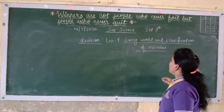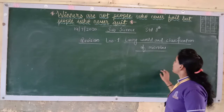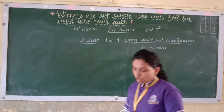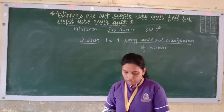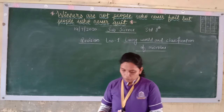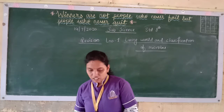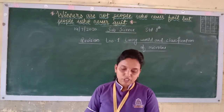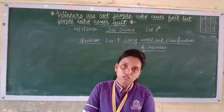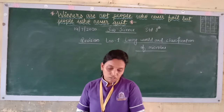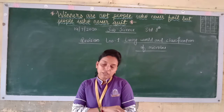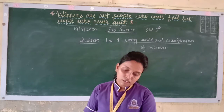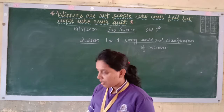So today we will start standard science for the topic of lesson number 1, that is Living World and Classification of Microbes. In this we had seen the five kingdom classification method that was given by Whittaker.